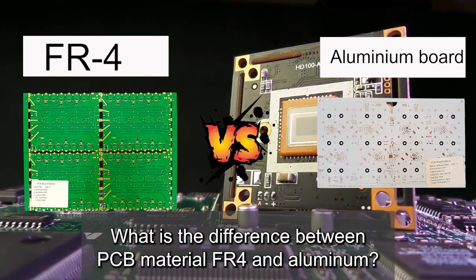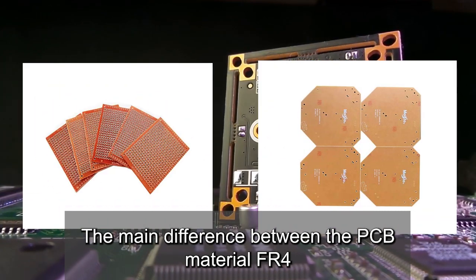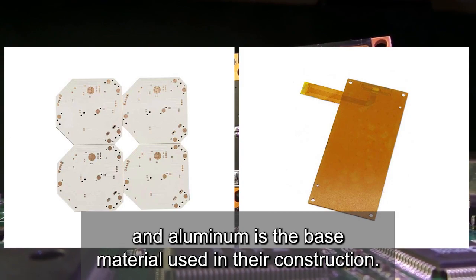What is the difference between PCB material FR4 and aluminum? The main difference between PCB material FR4 and aluminum is the base material used in their construction.